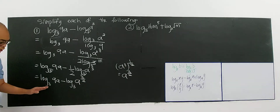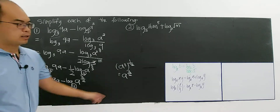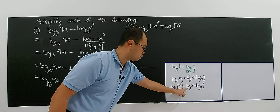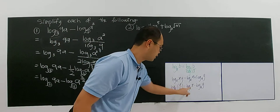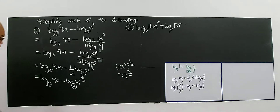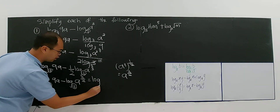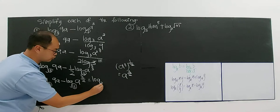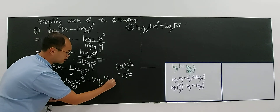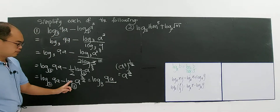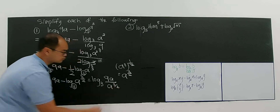Now you see the coefficient is 1, and the bases are the same — perfect. You can apply the formula. Since this is minus, I apply the subtraction formula: convert to divide. Which will be log base 3 of 9A divided by A to the power of 3 over 2.